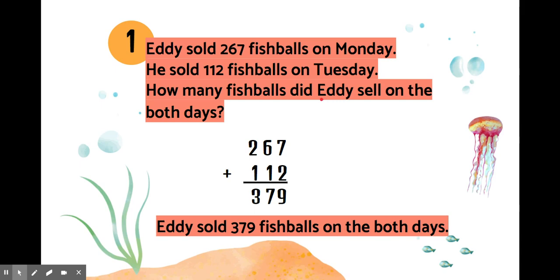So you take start from here. Eddie sold. We use sold here because the sentence is sold. 379 fish balls on both days. Like that.